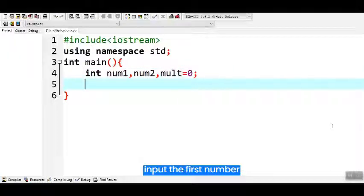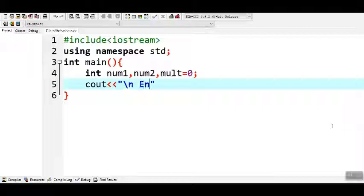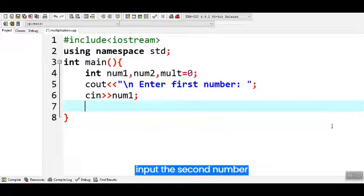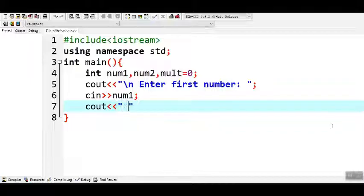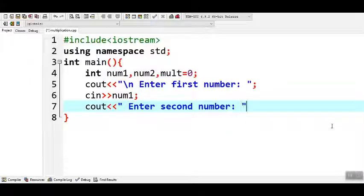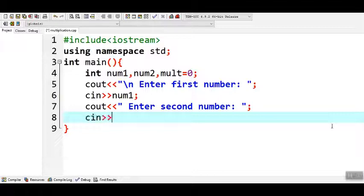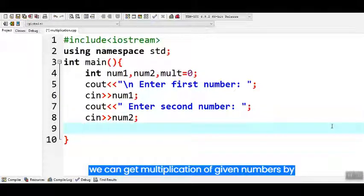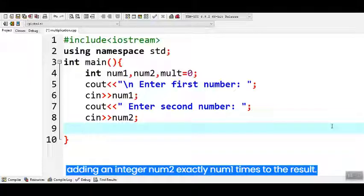Input the first number. Input the second number. We can get multiplication of given numbers by adding an integer num2 exactly num1 times to the result.